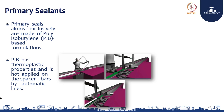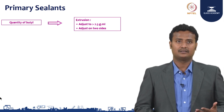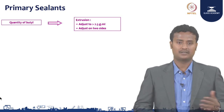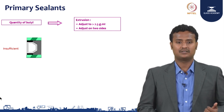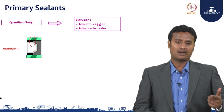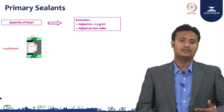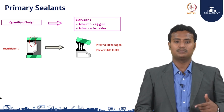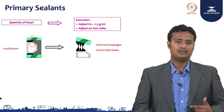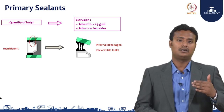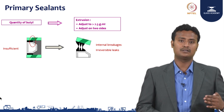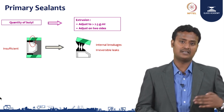The sealant will be uniformly applied. This is how the primary sealant is applied on the surface of the aluminum channel. The quantity of butyl extrusion is adjusted to about 2.5 grams per meter and can be adjusted on two sides. You can see in the image where there is insufficient application — identified by a red color — showing a lack of primary sealant fill. There will be a loss; for example, internal and irreversible breakages. The butyl, by its nature, blocks water vapor tightness — it prevents water vapor from getting into the DGU. It also supports mechanical loads like wind load when it hits the facade and the glass.